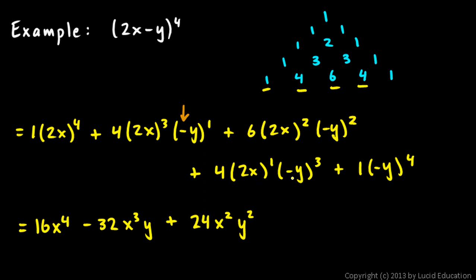And then here we have a negative y cubed, so this next term will be negative. And this is 4 times 2, which is 8. So it's minus 8x to the 1 y cubed. And then plus this negative sign raised to an even power will go away, and it's just plus y to the 4th. And that's your answer.